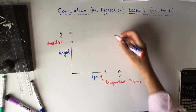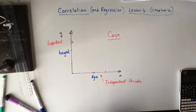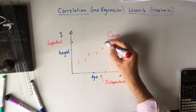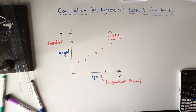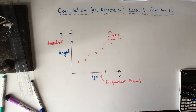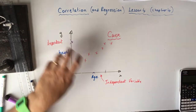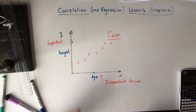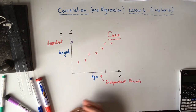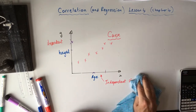This relationship — height of the tree dependent on its age — is called a causal relationship. One is causing the other. But be very careful: just because there's correlation, just because there's a relationship, it does not mean it's a causal relationship. In this case it is — the height is being caused by the tree getting older — but you can't always say that. Every time you get correlation, it does not mean it's causal.